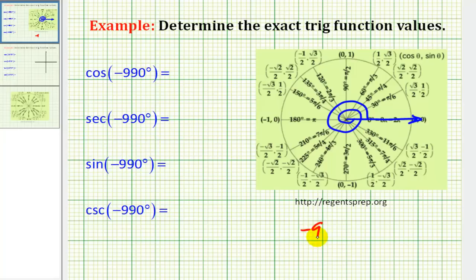And since 990 degrees is equal to negative 720 degrees plus negative 270 degrees, we need to rotate another 270 degrees clockwise. So if we do that, the terminal side of the angle is going to be along the positive y axis here.